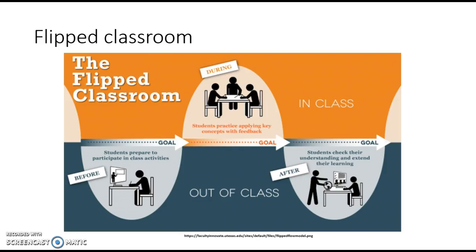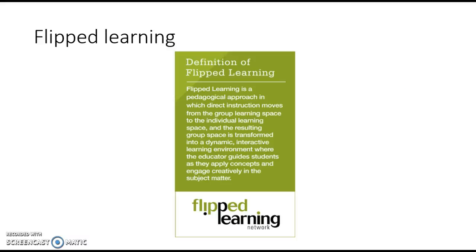Initially, the flipped classroom involved students preparing at home via videos, then applying concepts in the classroom with teacher feedback, and afterward checking understanding and extending learning — as in a regular blended classroom. The Flipped Learning Network proposed the following definition: flipped learning is a pedagogical approach in which direct instruction moves from the group learning space to the individual learning space, and the resulting group space is transformed into a dynamic interactive learning environment where the educator guides students as they apply concepts and engage creatively in the subject matter.